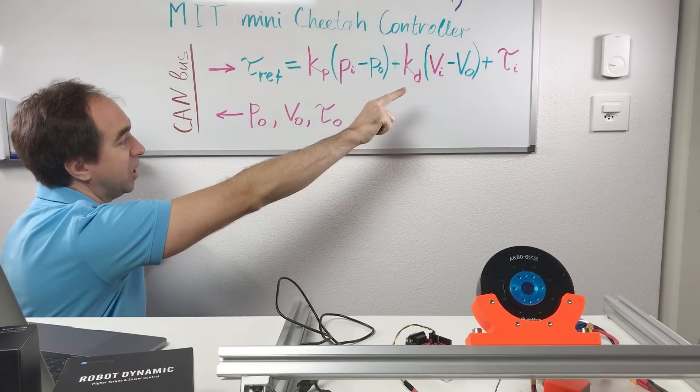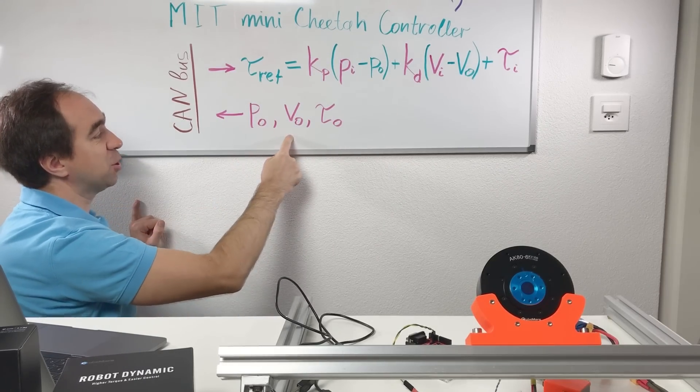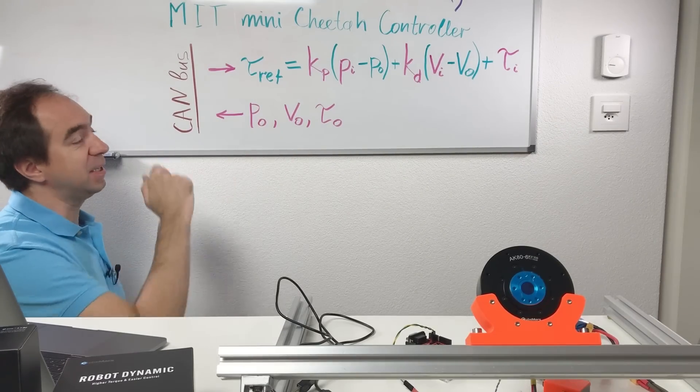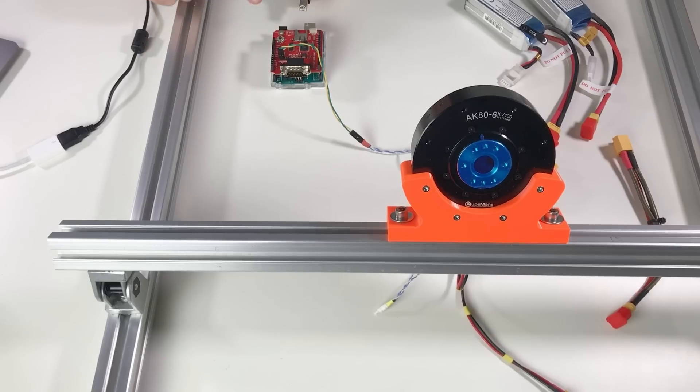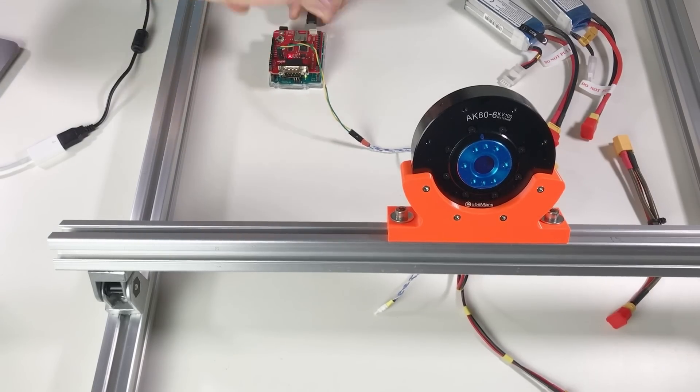And after you send these values to the controller, the controller replies immediately with the actual position, actual speed, and actual torque. Super easy! Let's see this in practice. I'm going to connect Arduino to computer like this. I can monitor position, speed, and torque from the actuator.